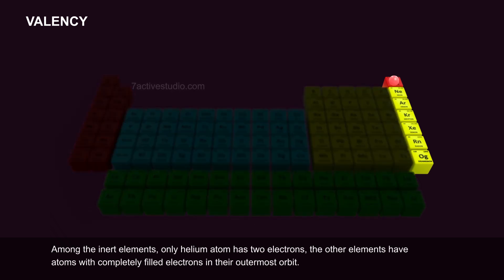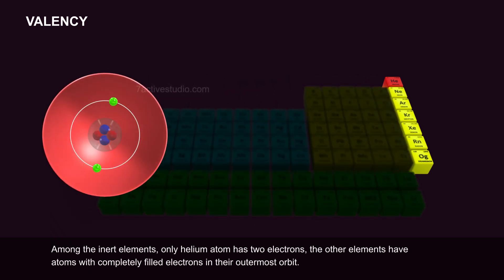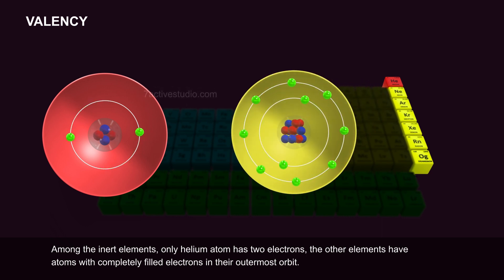Among the inert elements, only helium atom has two electrons. The other elements have atoms with completely filled electrons in their outermost orbit.